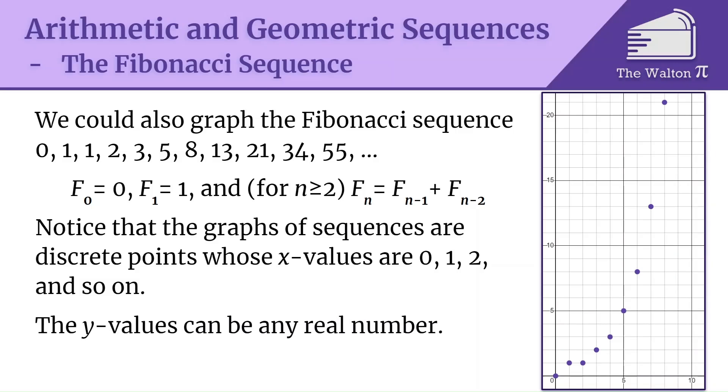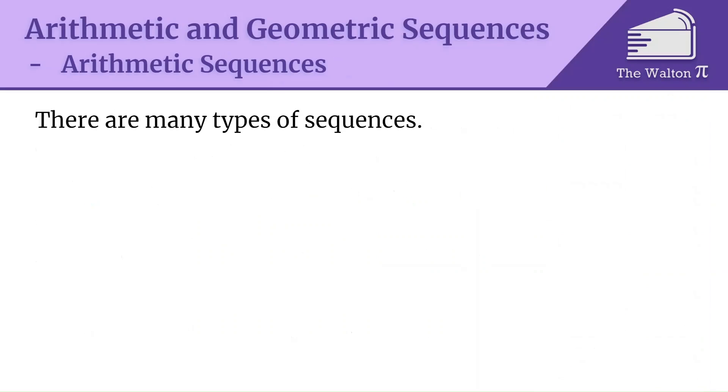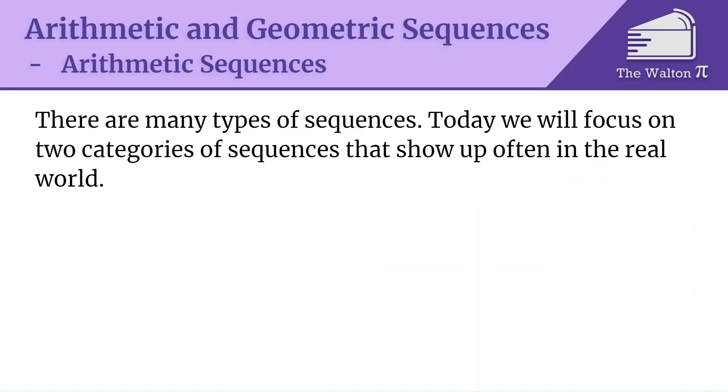The y values can be any real number, but the x values are 0, 1, 2, 3, 4, 5, and so on. They have to be those very discrete specific whole number values. Now let's start talking about the different types of sequences, because there's a lot. We're going to focus on two categories of sequences that show up often in the real world. These are the arithmetic and geometric sequences.